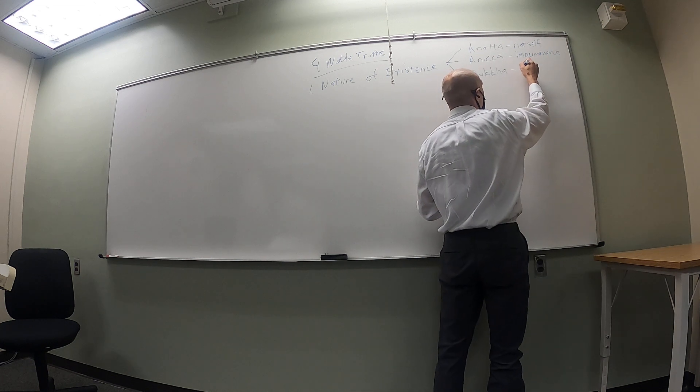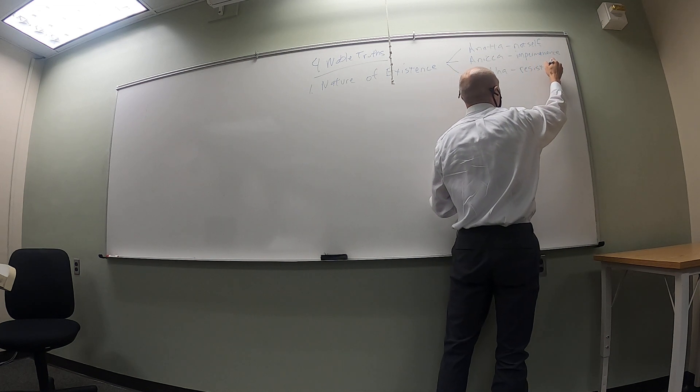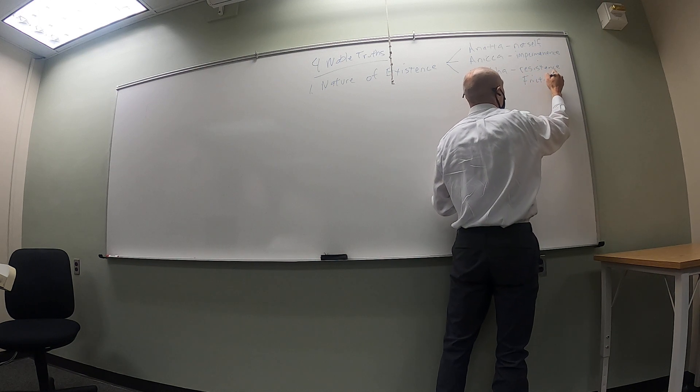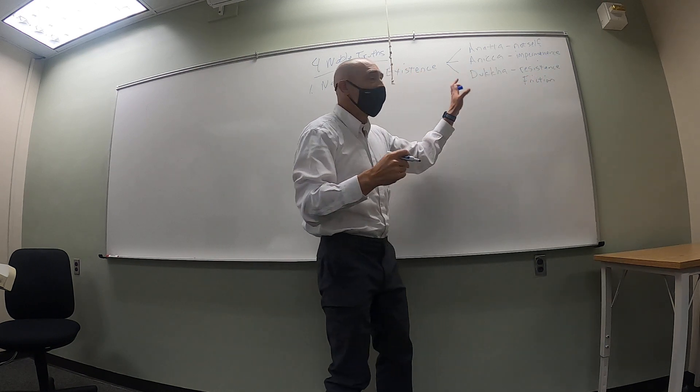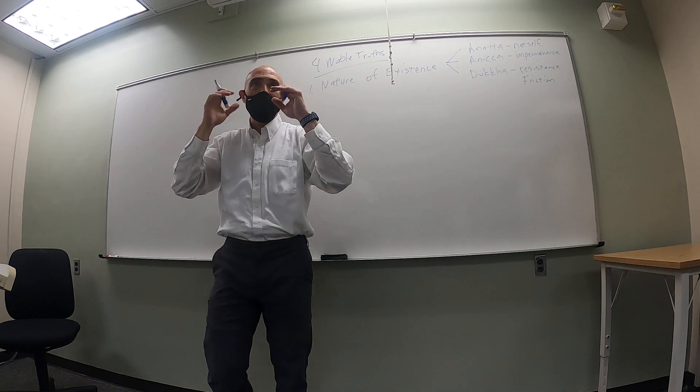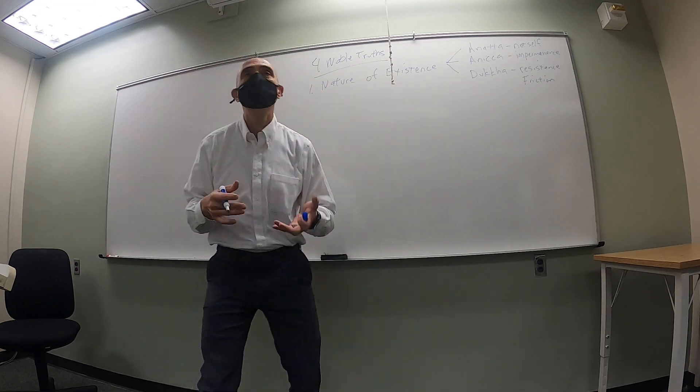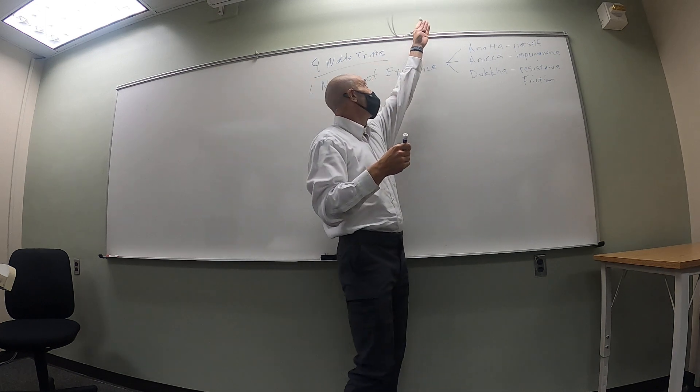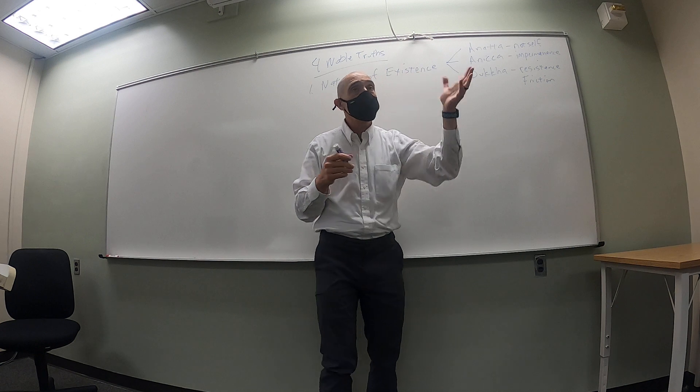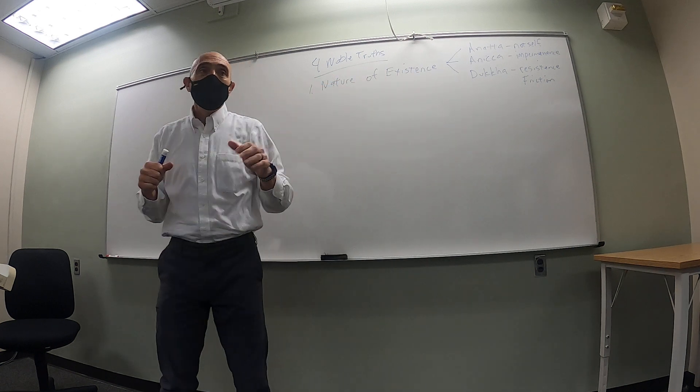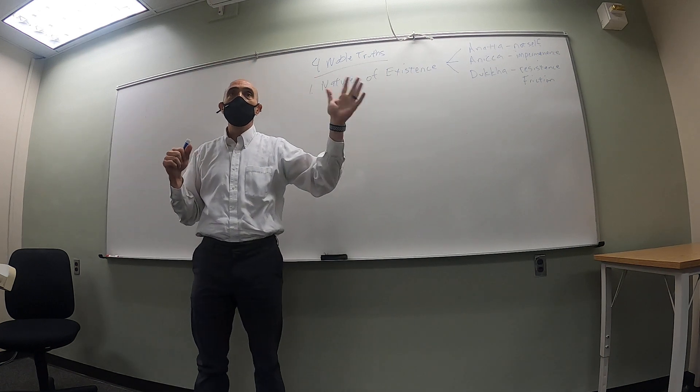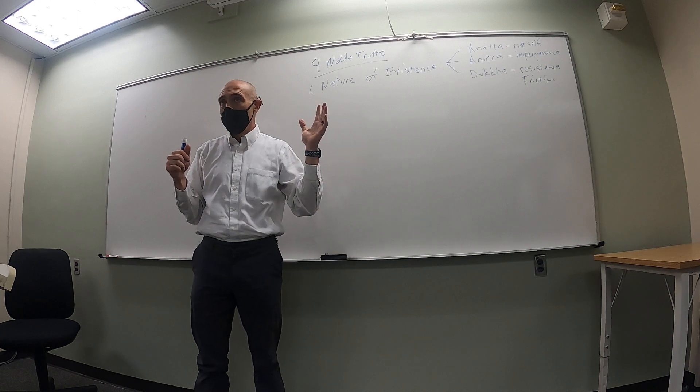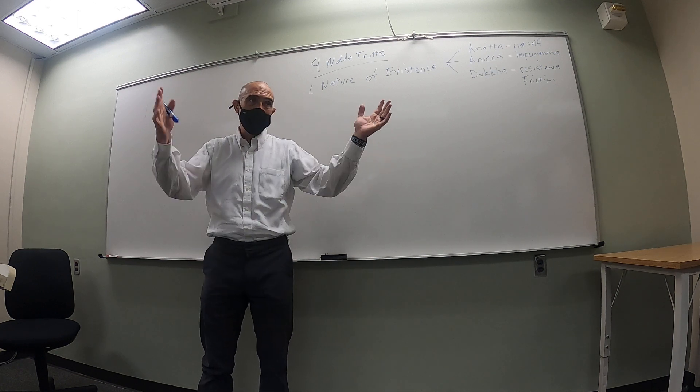Anatta, Anika, and Dukkha. Anatta is the notion of not-self, Anika is impermanence, and Dukkha is resistance—or I like to think of it as friction. A lot of times Dukkha gets this negative impression. Do any of you wake up to an alarm clock?